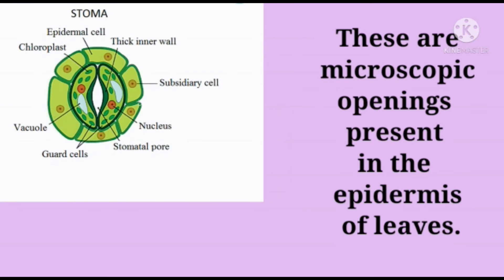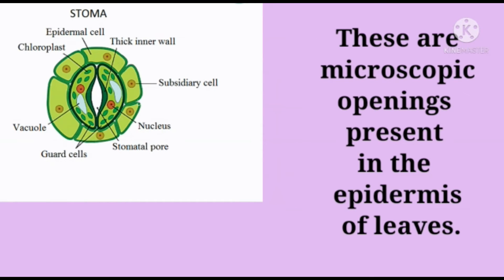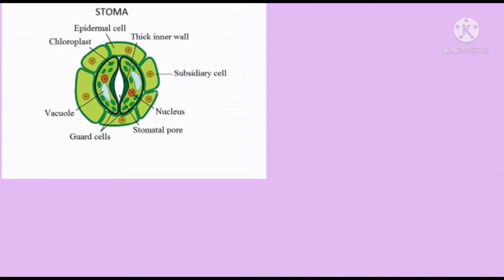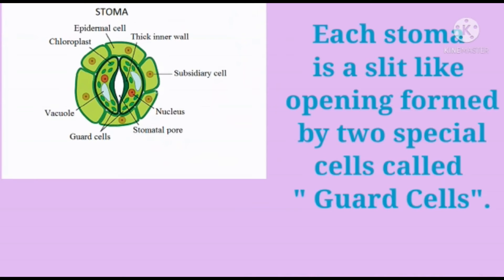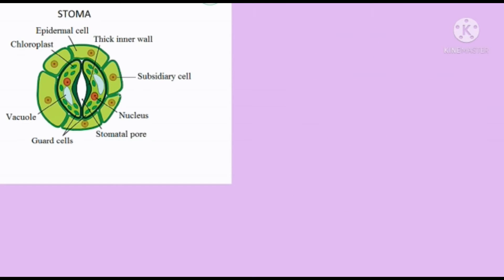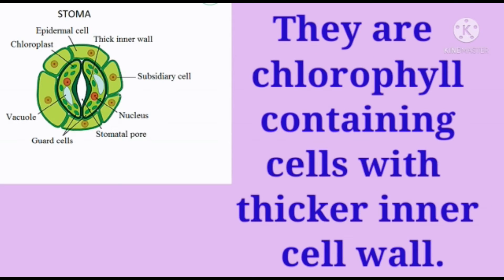Stomata are microscopic openings present in the epidermis of leaves. Plants exchange gases with the environment through these openings. Each stoma is a slit-like opening formed by two special cells called guard cells, which are chlorophyll-containing cells.